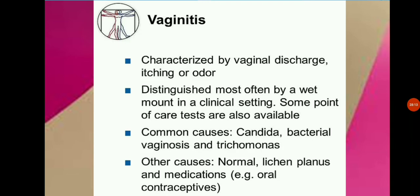For prevention of vaginitis, organisms that cause vaginitis thrive in moisture. For this reason, the genital area should be kept as dry as possible. Wearing cotton underwear and pantyhose with cotton crotches allows air to circulate and helps keep this area dry.